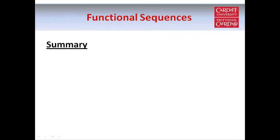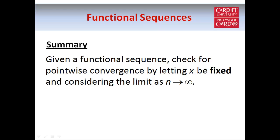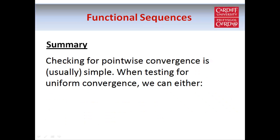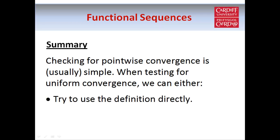To summarize: given a functional sequence, we check for pointwise convergence by fixing x and considering what happens as n tends to infinity. If the sequence is pointwise convergent to f(x), it is either uniformly convergent to the same f(x) or not uniformly convergent at all. Pointwise convergence is easier to check. For uniform convergence we can use the epsilon-N definition directly, but where possible we should use a theorem — and we've seen two useful theorems in this tutorial.